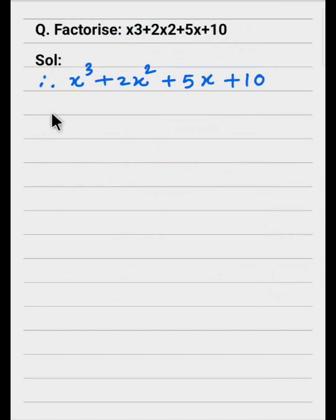This question is: factorize x³ plus 2x² plus 5x plus 10. Let's see how we solve it. First, we will take x² common, then x plus 2 will be left. Then, we will take 5 common, then what will be left? x plus 2.